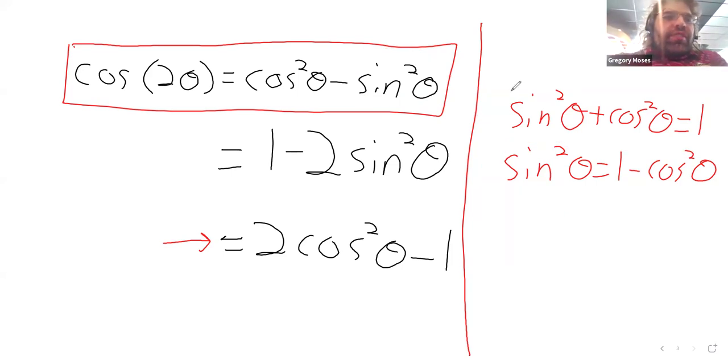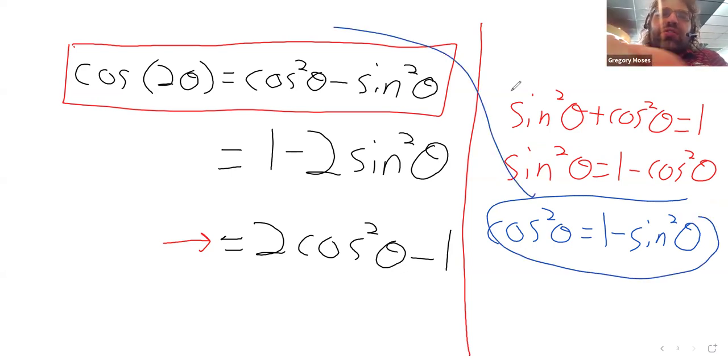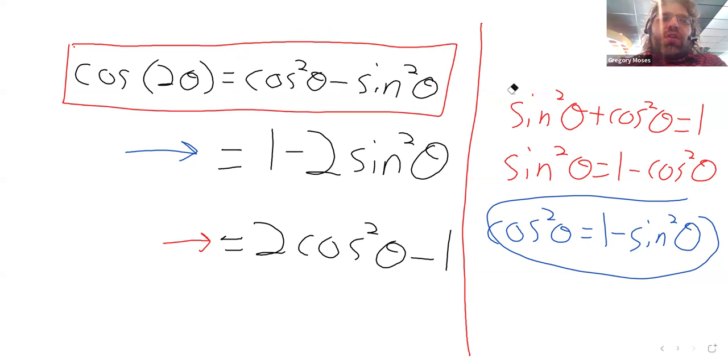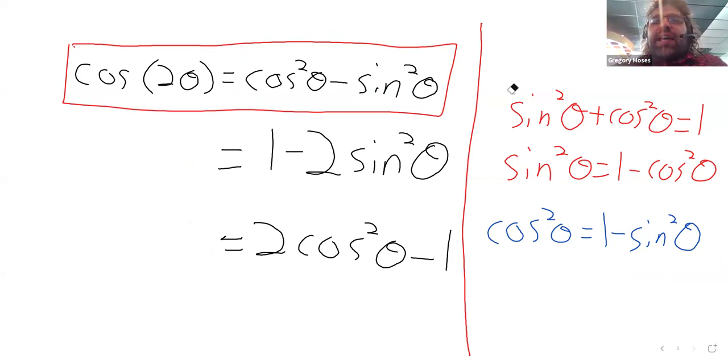Or if instead of solving for the sine squared, you solve for the cosine squared and plug it in, you wind up getting that identity. So this is the reason why the cosine of two theta has multiple identities associated with it. We have this sort of main identity, and then we have identities that we can get by plugging stuff into the main identity.